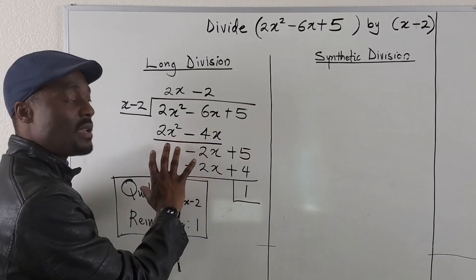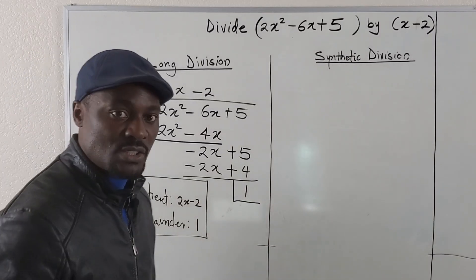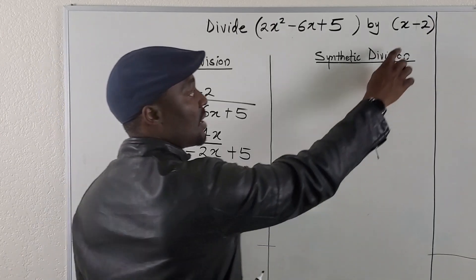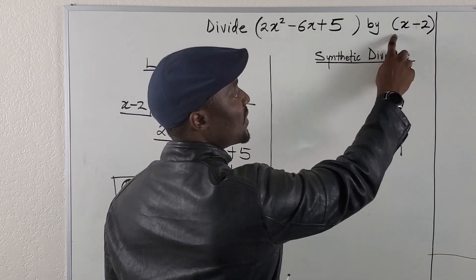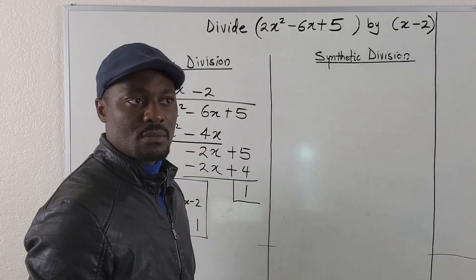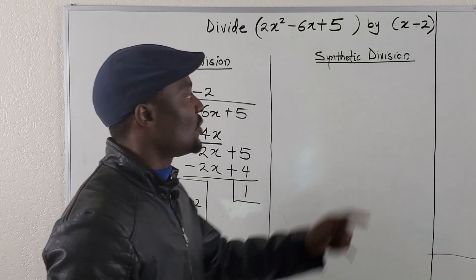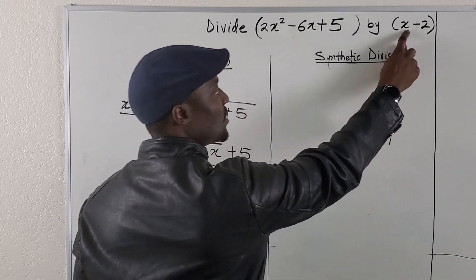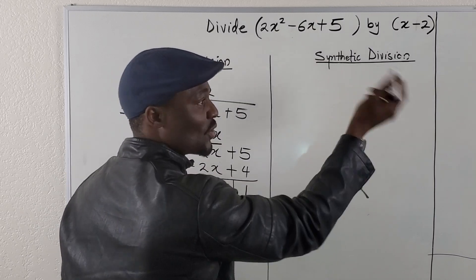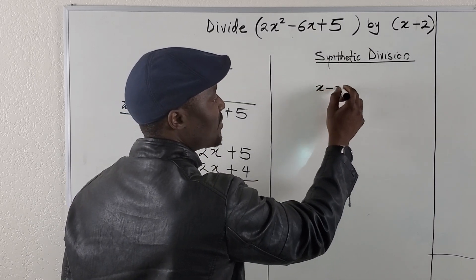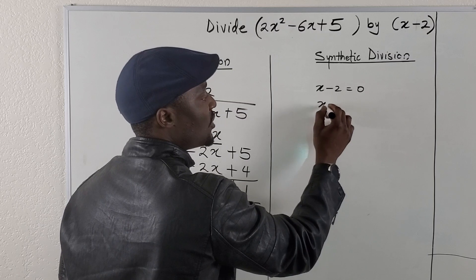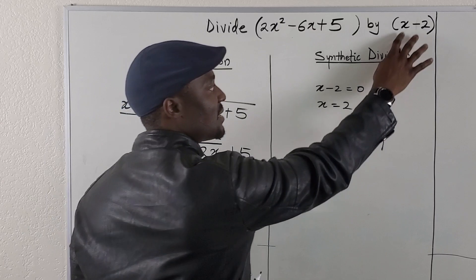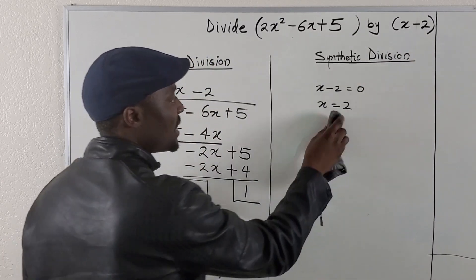If you want to do the same thing using synthetic division, the toughest thing for you to do is to decide: for the denominator, what will x be so that this will be equal to 0? x has to be 2, so that 2 minus 2 will give me 0. Another way to do that, instead of just guessing, is solving it as an equation — just write x minus 2 equals 0, and your x will be equal to 2. You need to know what x will be so that this polynomial will be 0.